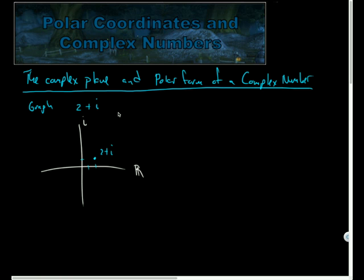Similarly, I could graph other points like negative 3 minus 5i would be back 1, 2, 3, and then down 5 in the imaginary direction, and there would be negative 3 minus 5i.